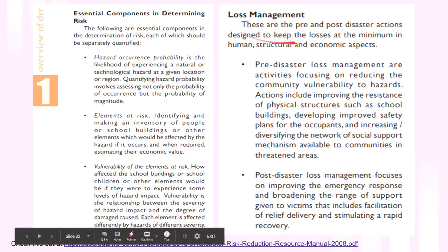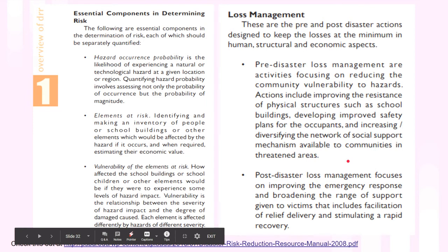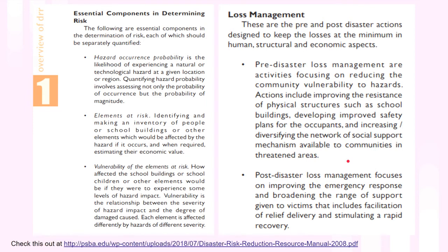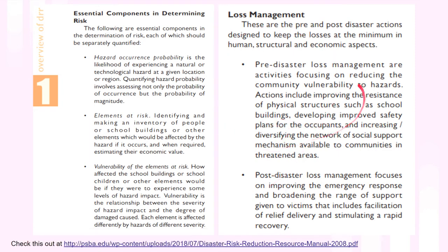After determining that, you also have to look into loss management, which is divided into pre- and post-disaster actions. Pre-disaster loss management focuses on reducing or mitigating vulnerability to a specific hazard — for example, converting light materials to heavier ones to resist fire, improving the resistance of physical structures, and developing safety plans for occupants. Should a disaster happen, post-disaster loss management addresses how to cope and recover — what support will be given to victims, and how to facilitate relief delivery and rapid recovery.